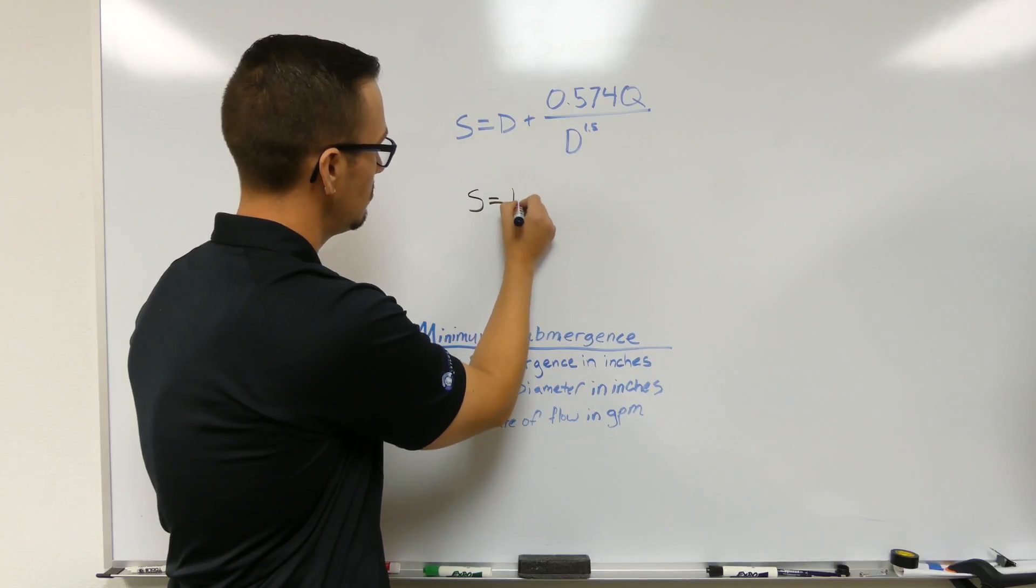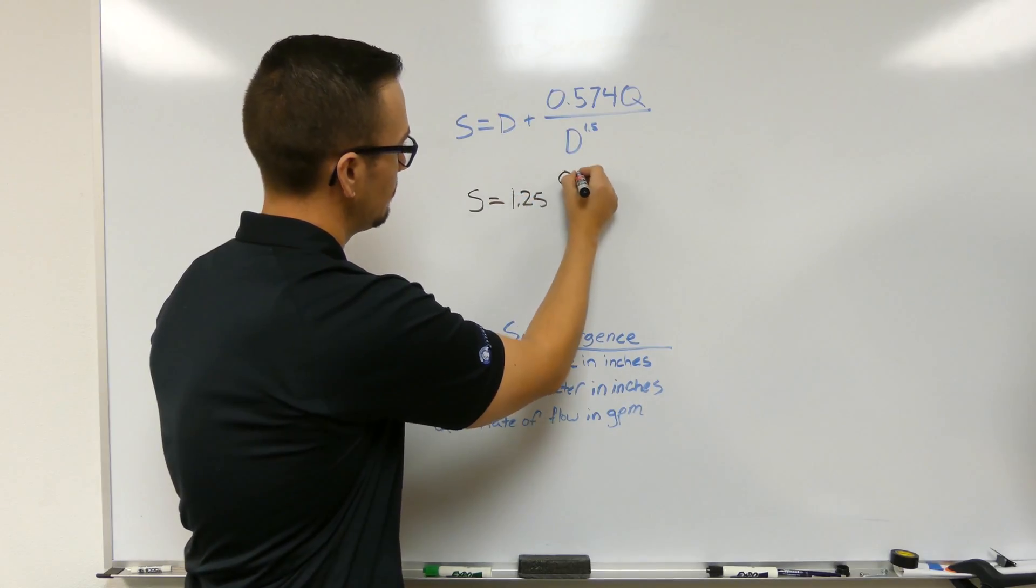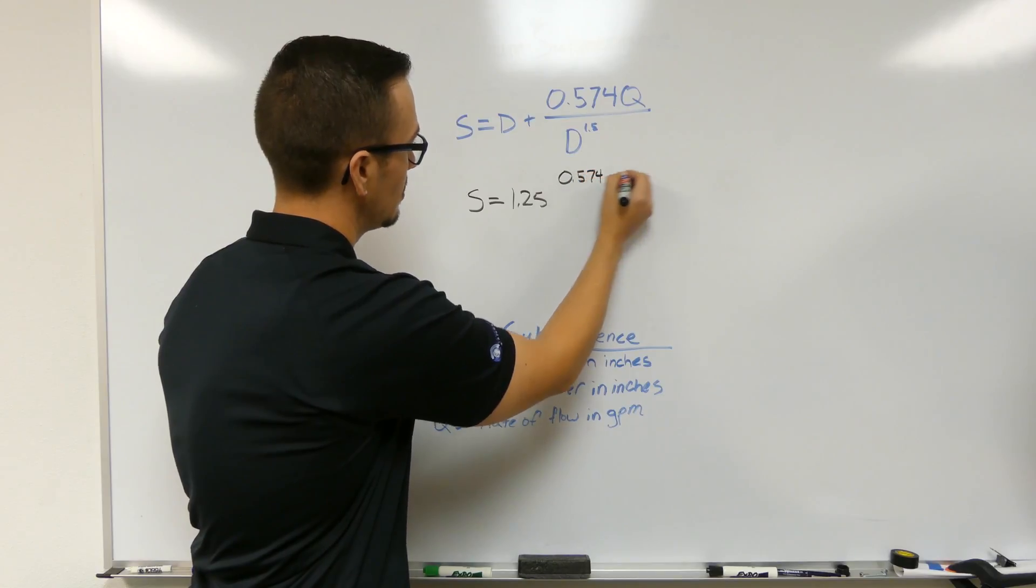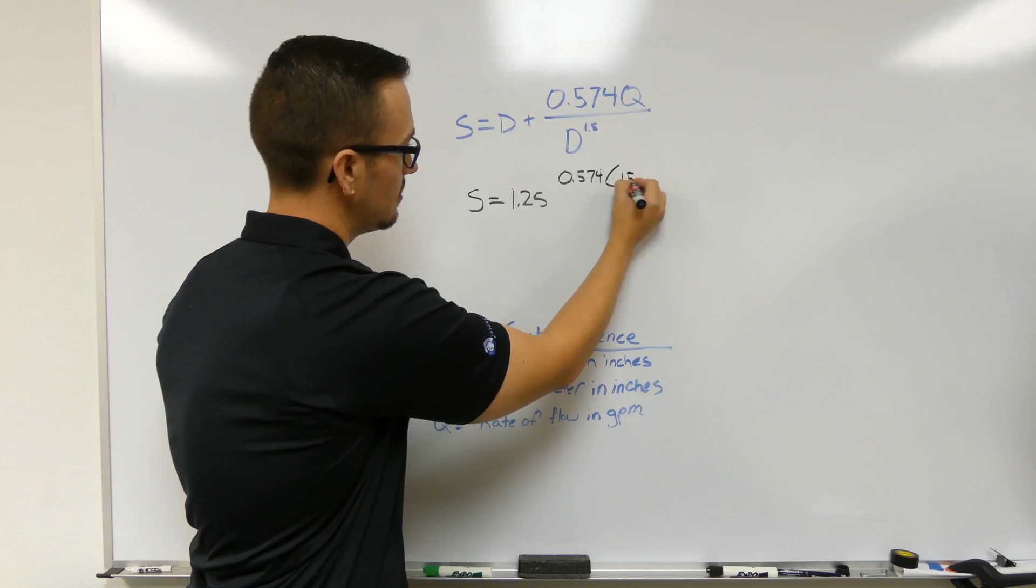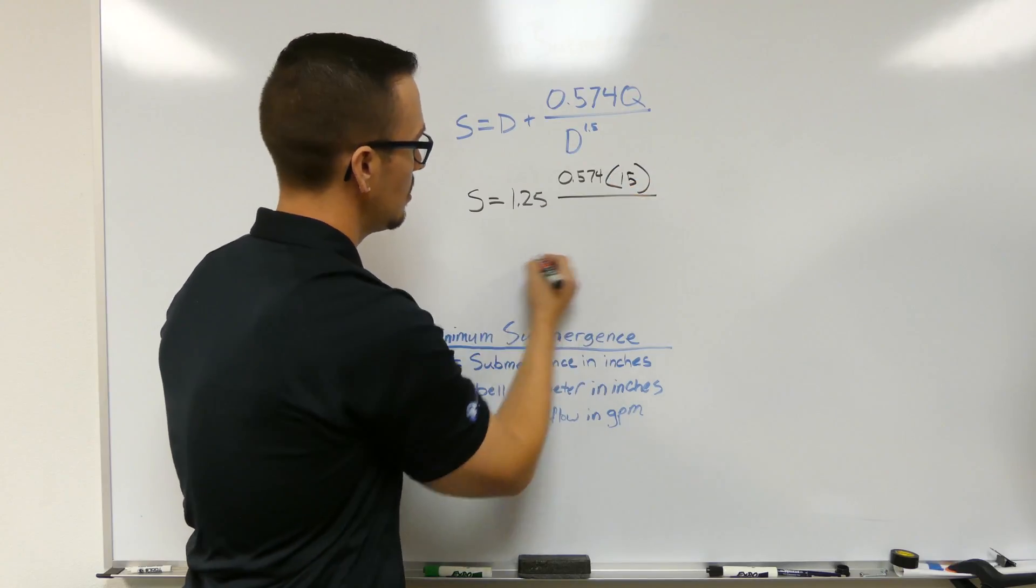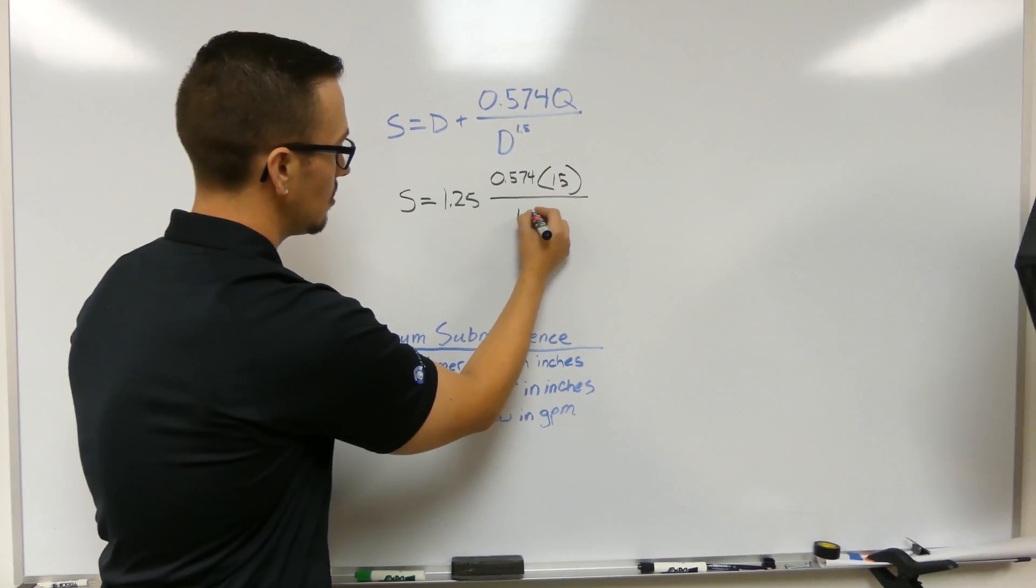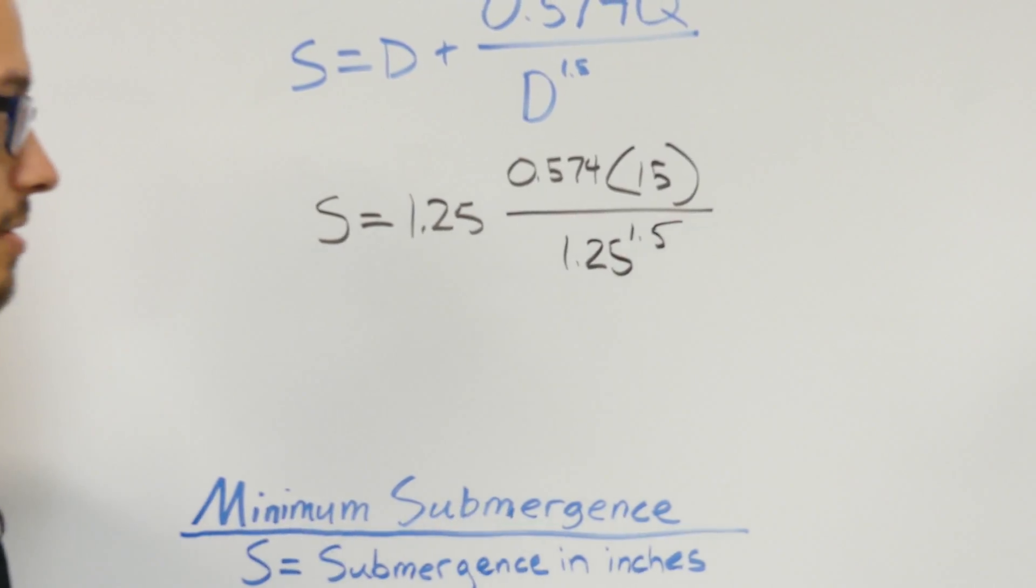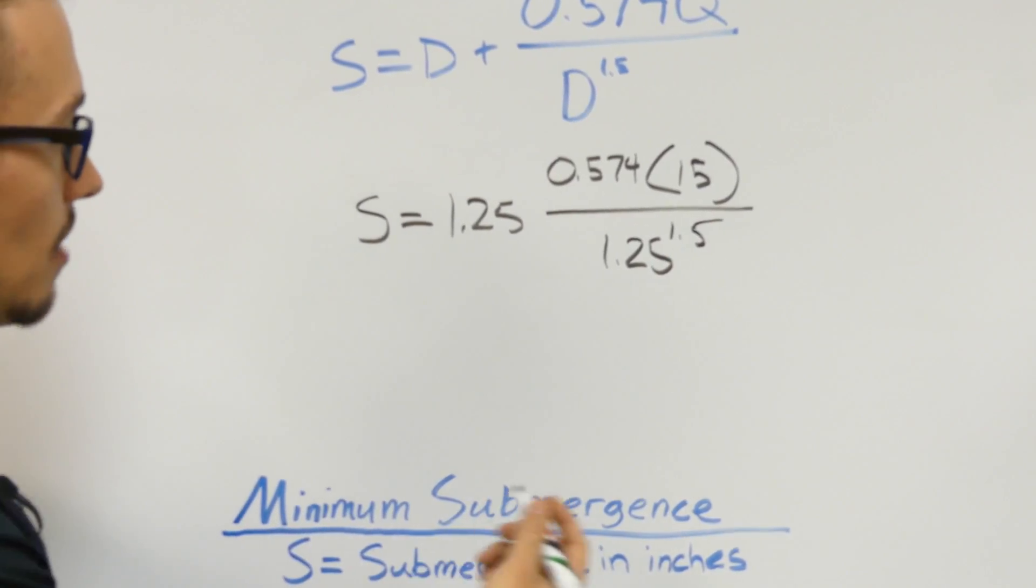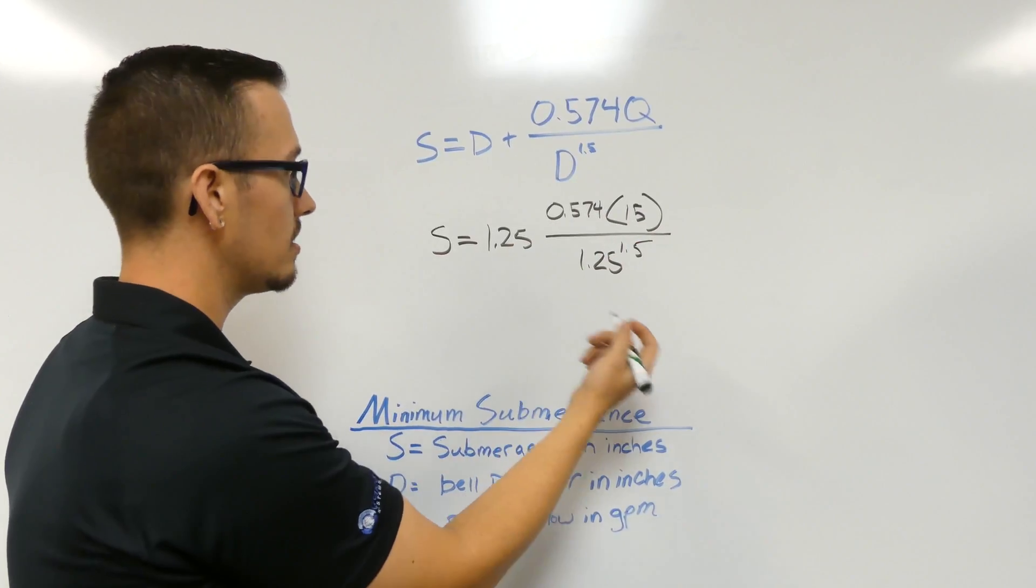S equals 1.25 and then 0.574 Q, which is going to be our flow rate of 15 gallons per minute, over the bell diameter again to the 1.5 power. So that'd be 1.25 to the 1.5 power.